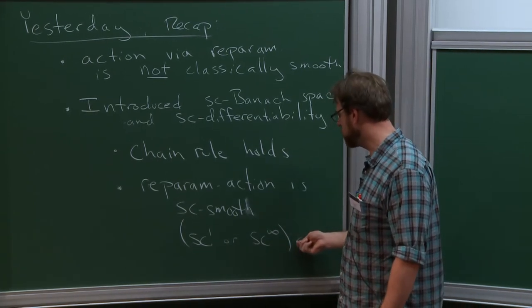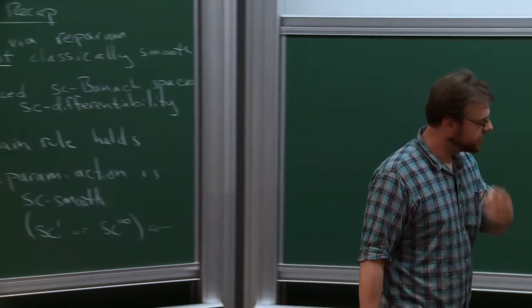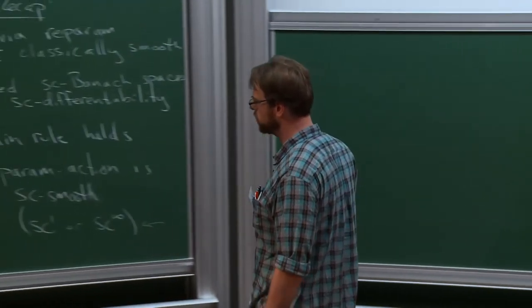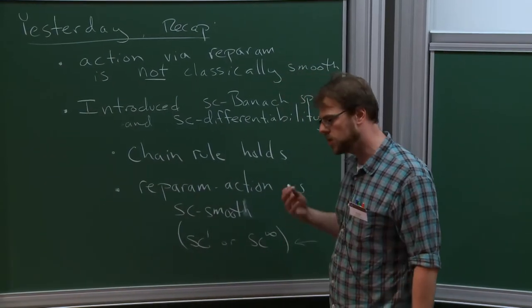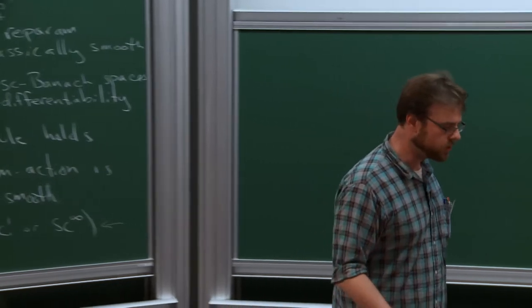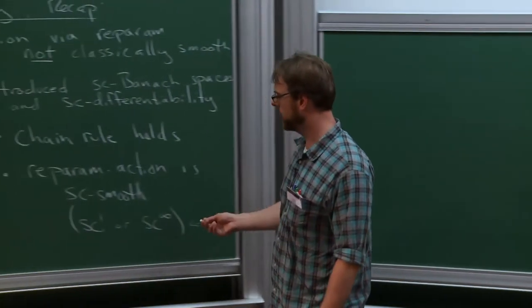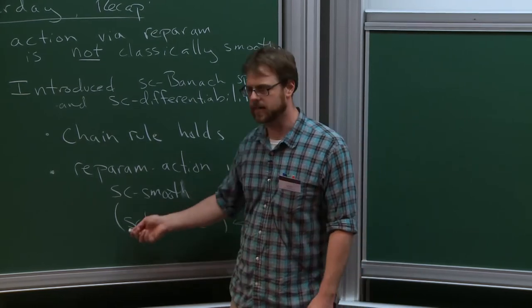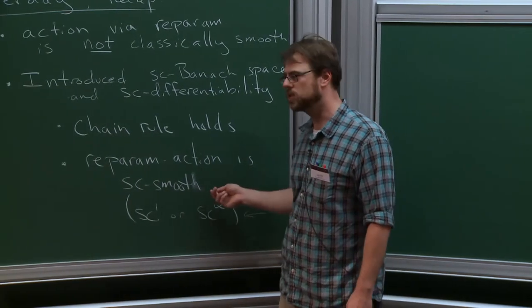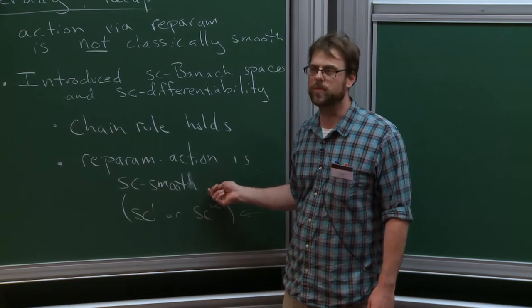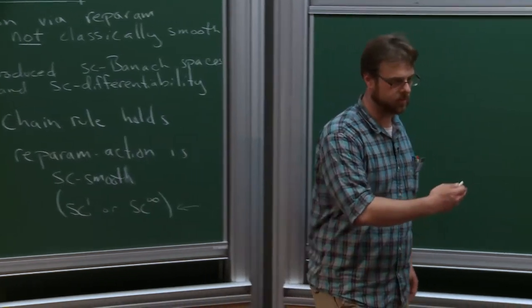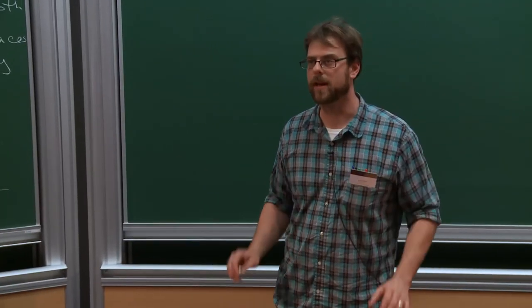The last thing I wanted to point out: for me, if someone tells me a function is smooth, that always means C∞. But there's a number of people who think smooth should just mean C¹. For all of my talks, smooth is meant to mean C∞. In particular, SC smooth is meant to be SC∞, not SC¹. And then you can ask: did we actually show the reparameterization action is SC smooth? The answer is, strictly speaking, no. But this proof carries over — you just iterate it — and then you can actually prove the reparameterization action, at least in the toy case presented, is in fact SC smooth.